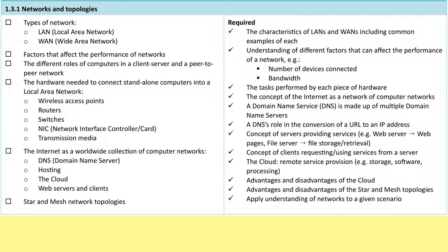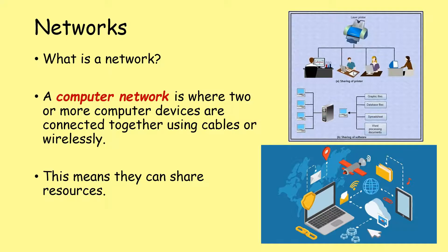So that's just what we're going to do at the top here — types of network, LAN and WAN, why we need networks, what they are, that sort of thing. First question: what is a network? Well, a network is where two or more computer devices are connected together using cables or wirelessly.